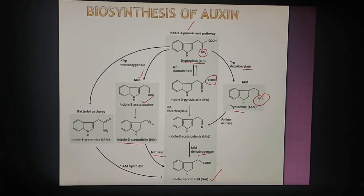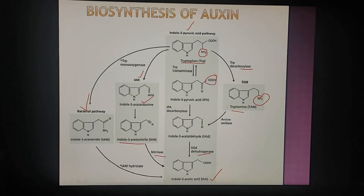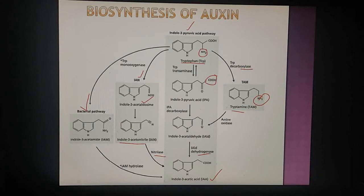The next pathway is the bacterial pathway, found in Pseudomonas, Erwinia (Sevastonine), and Agrobacterium tumefaciens. Here, cryptoflavin monooxygenase enzyme produces indole-3-acetamide, and then indole-3-acetamide hydrolase enzyme converts it into indole-3-acetic acid.